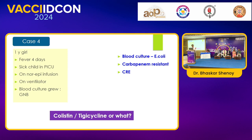Fourth case: a PICU case. Fever 4 days, sick child on norepinephrine, ventilator. Culture grew gram-negative bacteria, E. coli, which is carbapenem resistant — CRE. If we have the BioFire respiratory panel with resistance gene pattern available, we can go for that. It will tell whether CRE is carbapenem resistant due to carbapenemases or other mechanisms. There are several different classes of carbapenemases — A, B, C, and D. In India, it is mostly OXA-48 and NDM or MBL resistance — metallo-beta-lactamase.